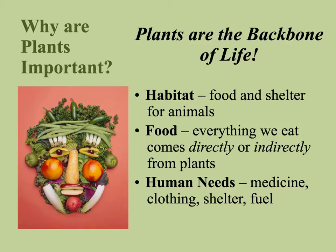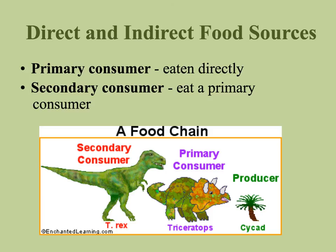Plants provide food — everything we eat comes directly or indirectly from plants. They also provide medicine, clothing, shelter, and food. A direct use comes directly from a plant without modification: you pick an apple and eat it. An indirect use would be making bread — you take wheat, sugar cane, make flour and sugar, add yeast, mix with water, bake it, and get bread. That's an indirect use of a plant.